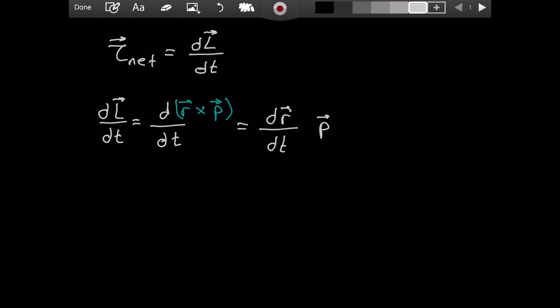However, we need to put a cross in between because we have a cross product, not a normal product. An ordinary product is not defined for vectors. You have dot product or you have cross product. You don't have another option because these two are not scalars, they are vectors.